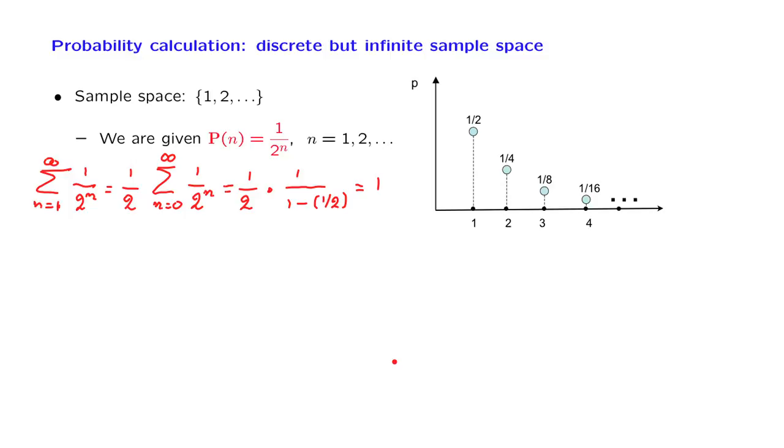So indeed, it appears that we have the basic elements of what it would take to have a legitimate probability law. But now, let us look into how we might calculate the probability of some general event.